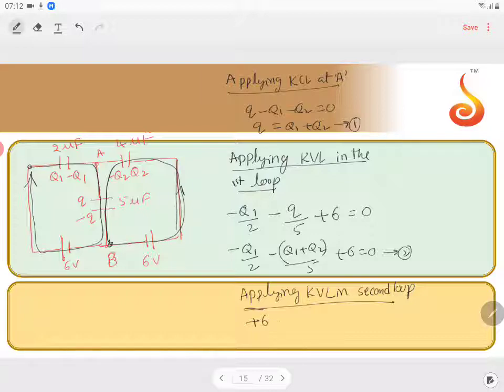So minus Q2 by 4, minus Q, the small Q value directly, I will substitute Q1 plus Q2 divided by 5 equals 0.